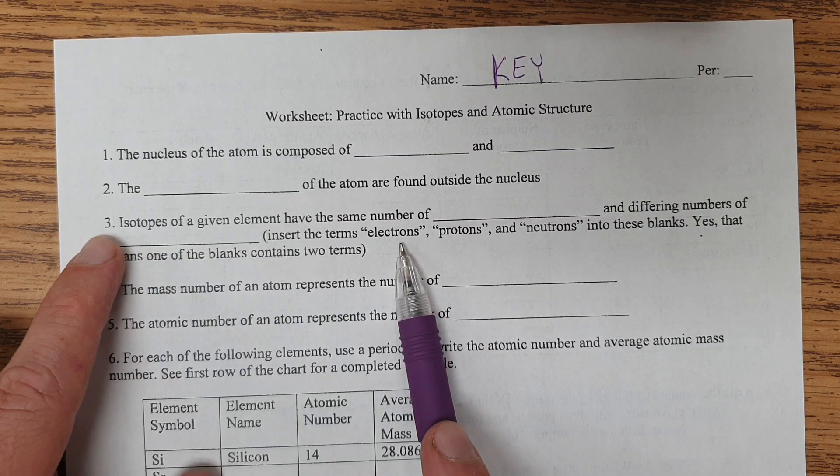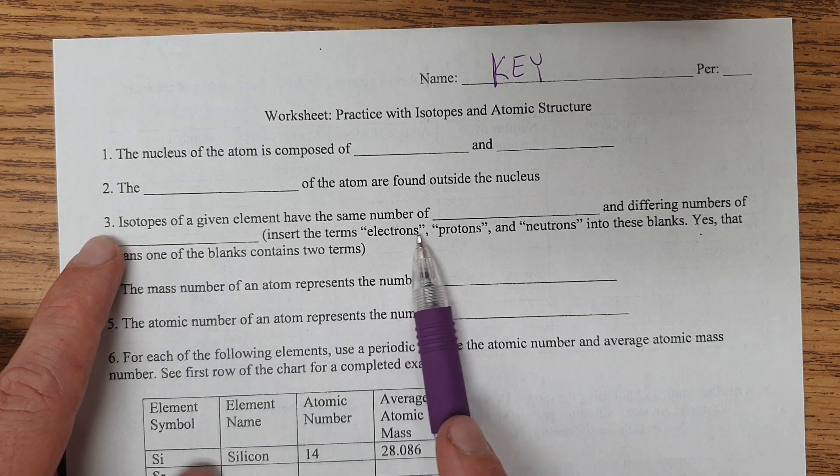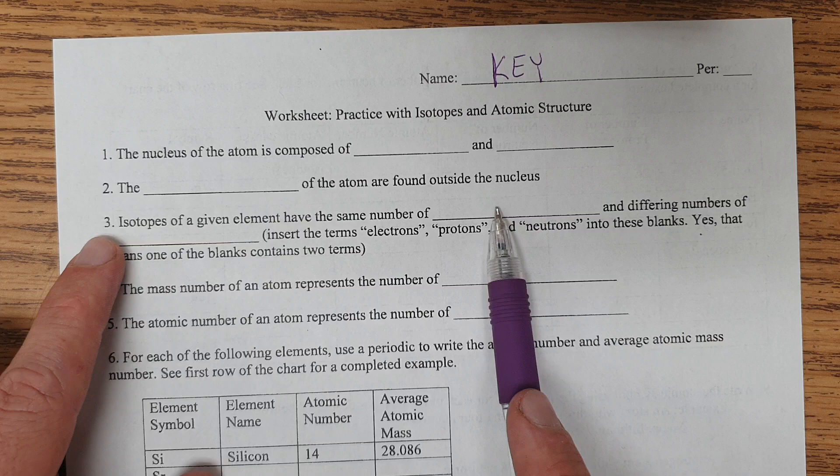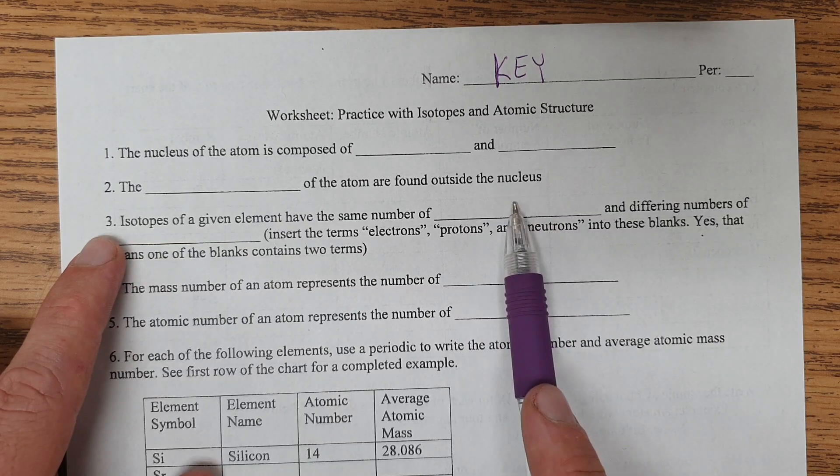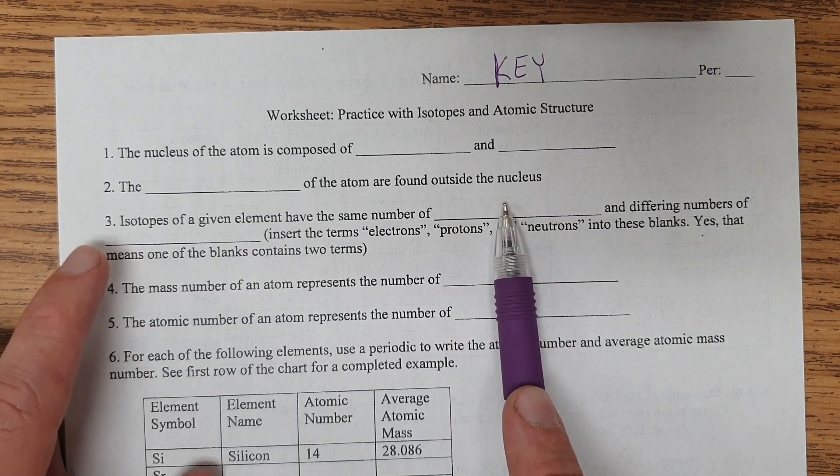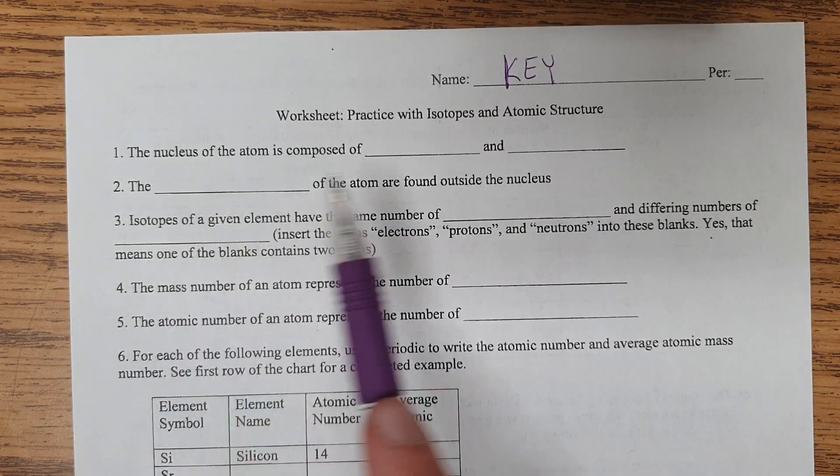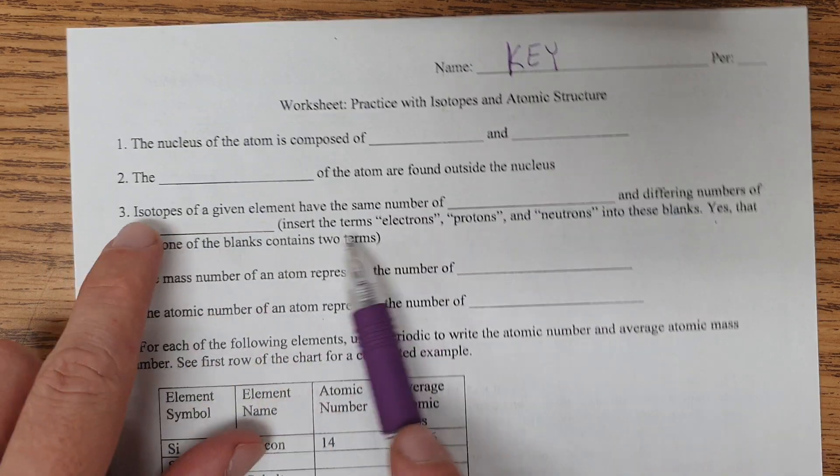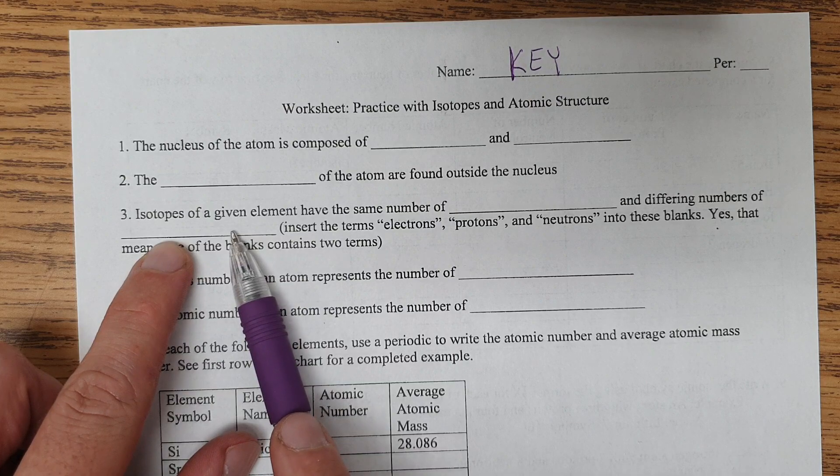As far as neutral atoms are concerned, number of electrons should equal number of protons in order to be neutral. So you put protons and neutrons in this blank, because changing the protons changes the element. So in order to be two isotopes of the same element, you've got to have the same number of protons. And then you put the word neutron in this blank right here.